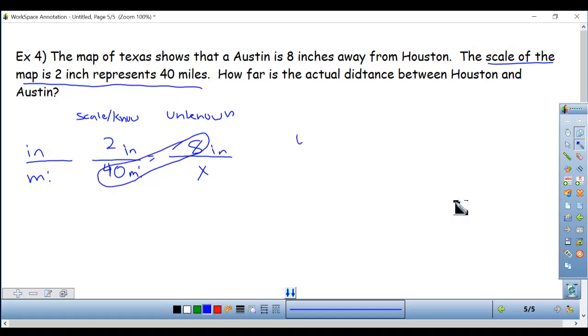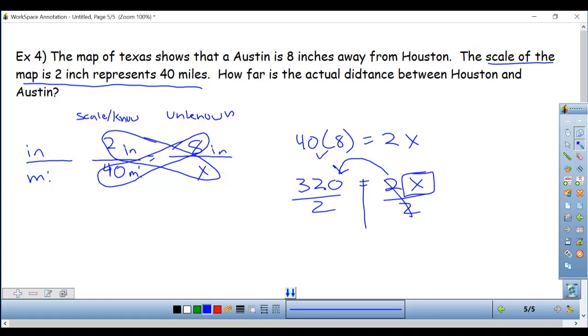So let's set it up. 40 times eight. Set that equal to 2x. And simplify. I can actually do 40 times eight. 40 times eight gives me 320. And I'll get my variable by itself by moving the two across the equal sign. Two is multiplying with x. So I have to divide to cancel these out. And I get 160 equals x. So the answer is x equals 160 miles. Austin is 160 miles away from Houston.